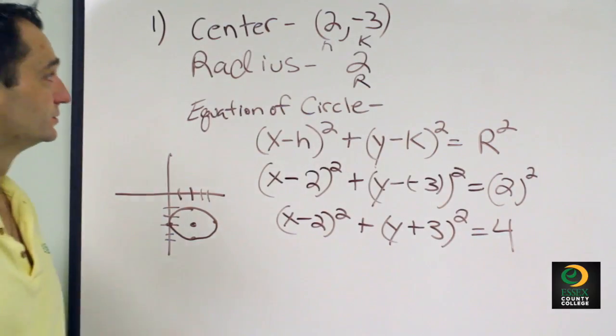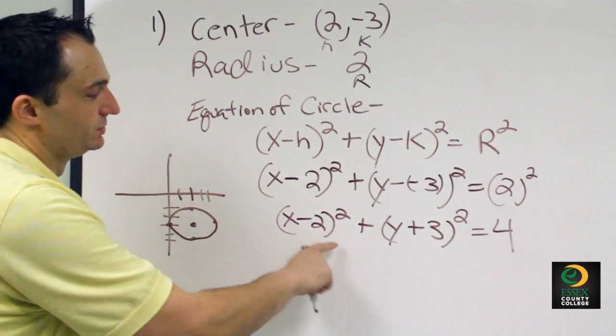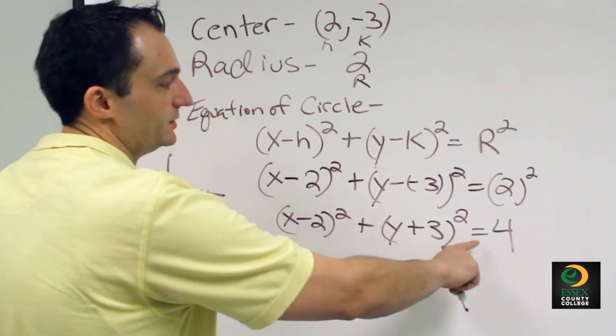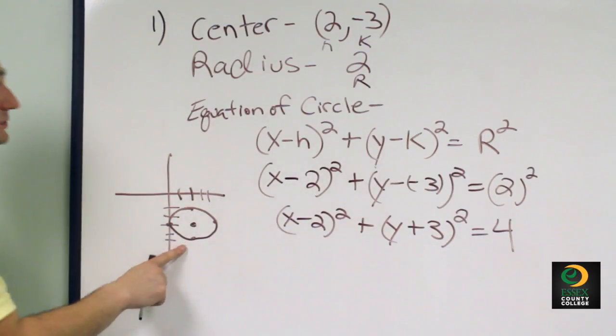And that will be the graph. So in conclusion, your equation is x minus 2 quantity squared plus y plus 3 quantity squared equals 4. And this will be your graph. We'll see you next time.